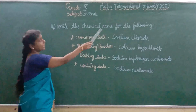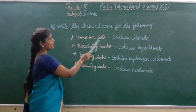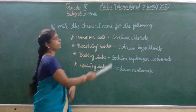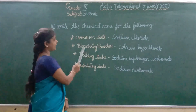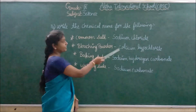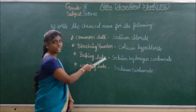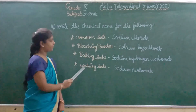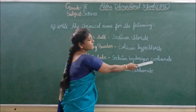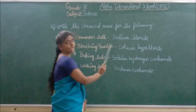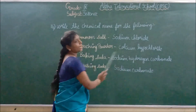Write the chemical names for the following: common salt — sodium chloride; bleaching powder — calcium hypochlorite; baking soda — sodium hydrogen carbonate; washing soda — sodium carbonate.